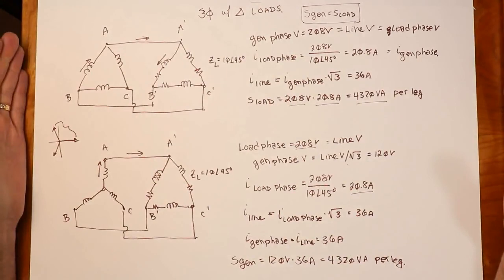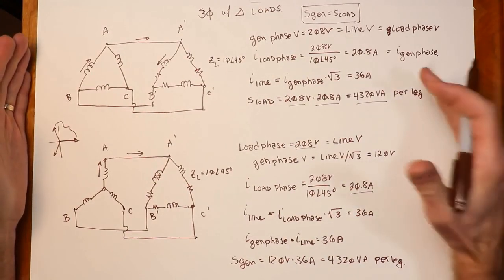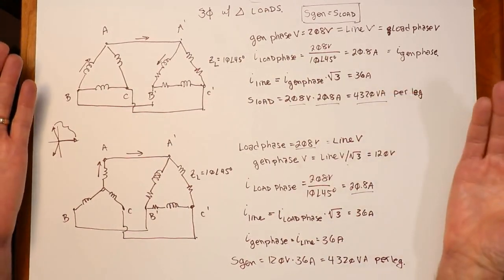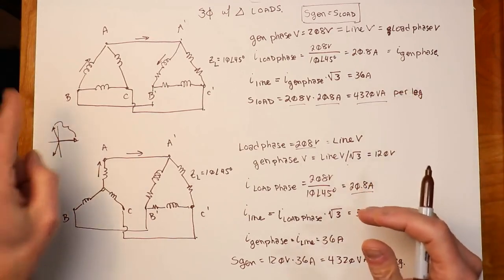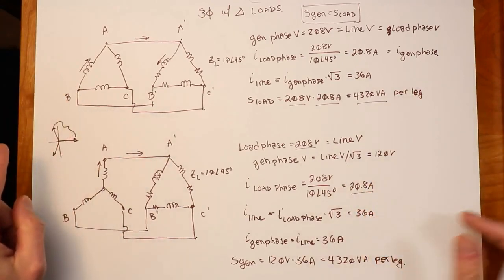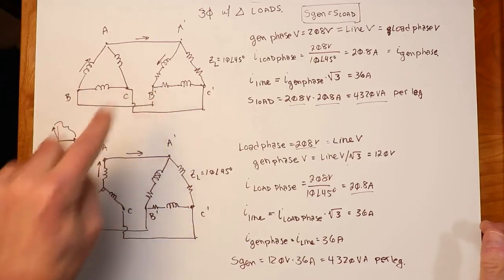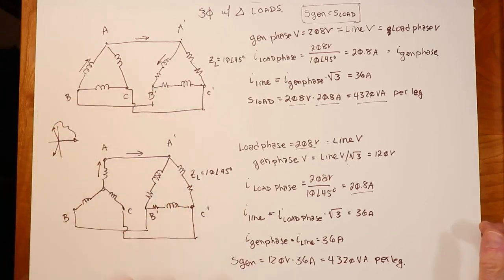So that pretty much covers everything on these three-phase systems. The four kinds of connections that we have. We have a y-y connection, we have a delta-y connection, delta-delta, and y-delta. And there you go.